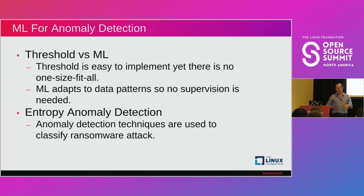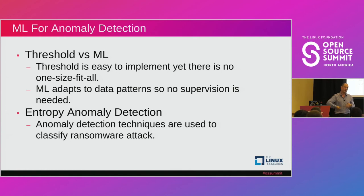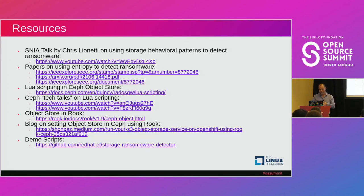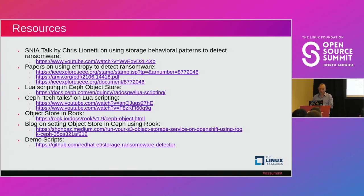As for next steps: those thresholds are very hard to figure out. One thing we can do is use bucket notifications — an external system reads the object and does some offline processing, possibly feeding data into a machine learning system to figure out better thresholds or a better algorithm. But this is really outside of the scope, just an idea. I didn't invent all these ideas — using entropy for ransomware detection is the subject of a couple of papers, and people debate whether it's good or bad. You're welcome to read those papers and decide for yourself.